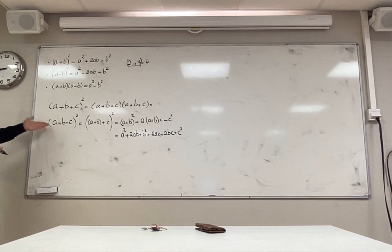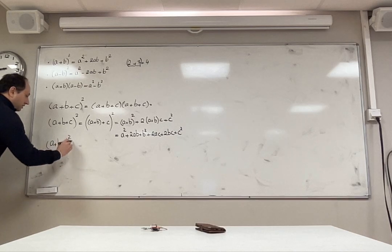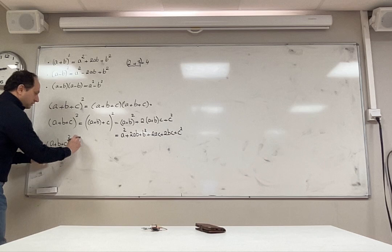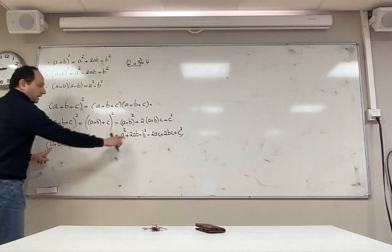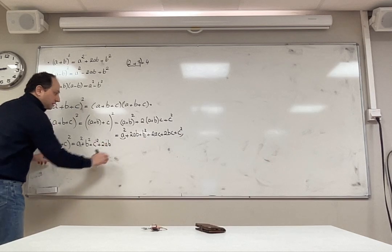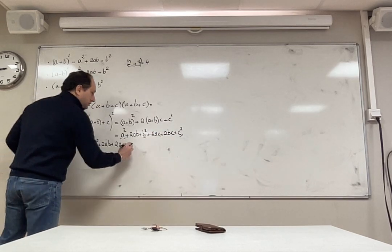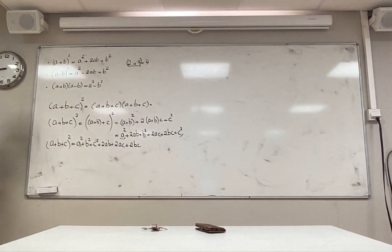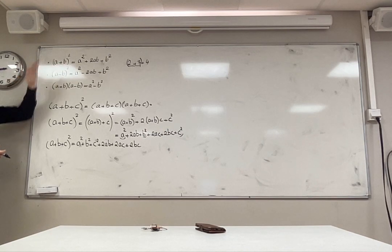If you are patient and multiply three terms by three terms, you get nine terms, and adding similar ones gives this result. In some books this is also given as an identity: a plus b plus c squared equals a squared plus b squared plus c squared plus 2ab plus 2ac plus 2bc. This is not in your lesson so you don't need to memorize it, but I want you to understand how the formula can be extended.